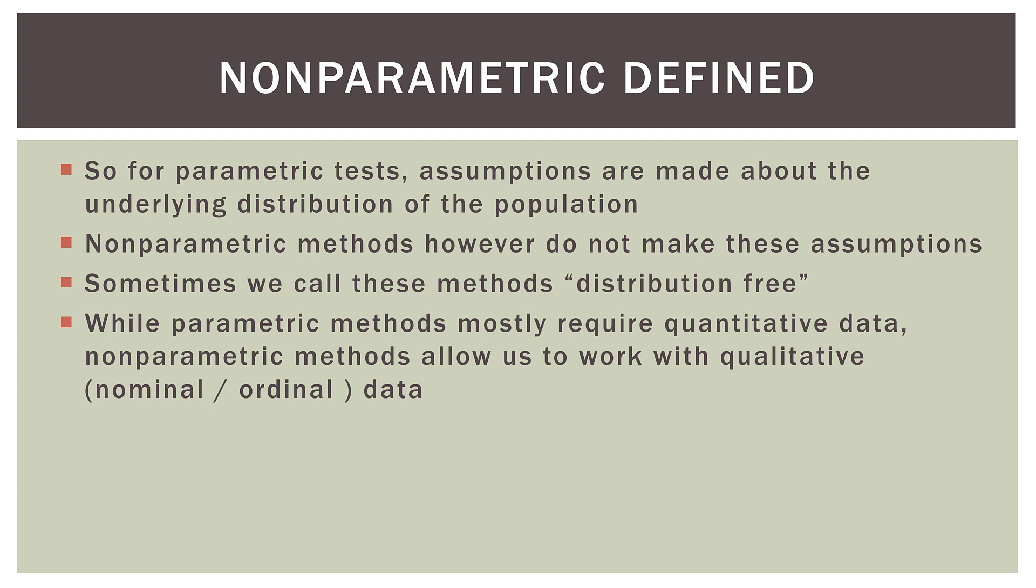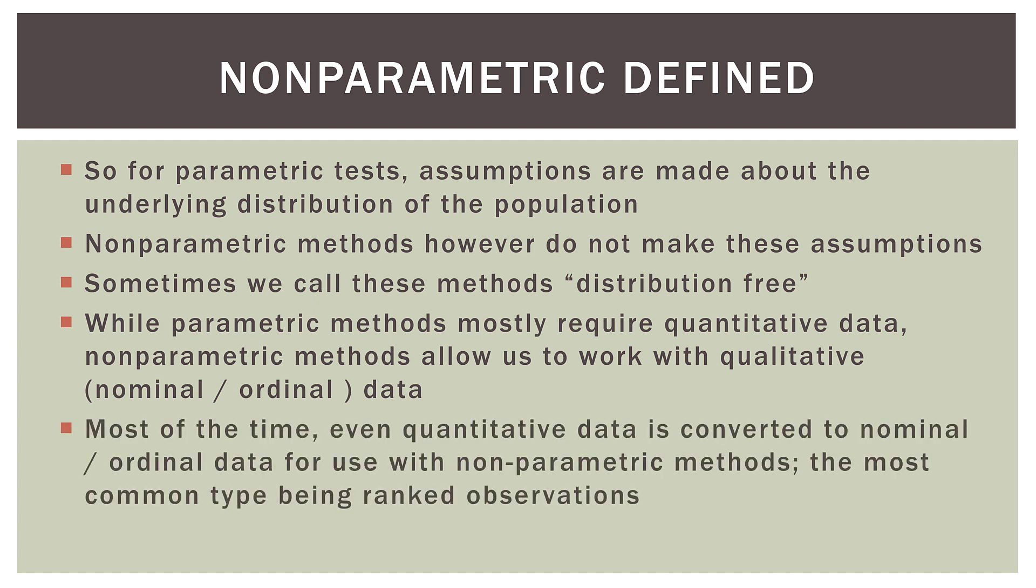While parametric methods mostly require quantitative data, non-parametric methods allow us to work with qualitative or nominal or ordinal data. And actually most of the time, even quantitative data is converted to nominal or ordinal data for use with non-parametric methods. The most common type being ranked observations. So for many non-parametric methods, even though we have a set of quantitative data, we don't really analyze them as quantitative data. We do something else to them. We take them to a different type, whether it be a nominal or ordinal data set.